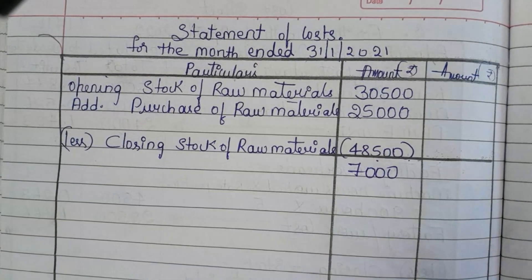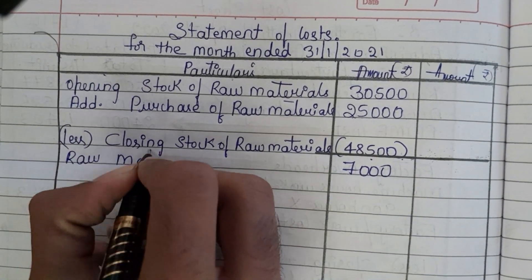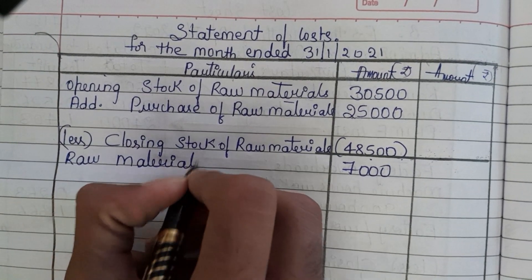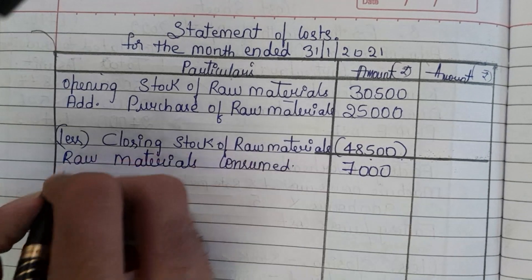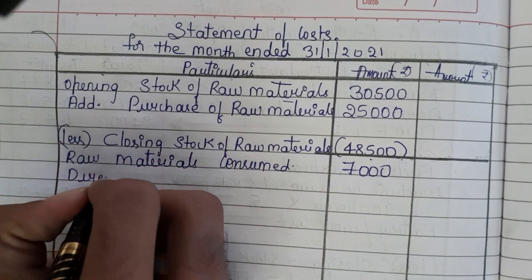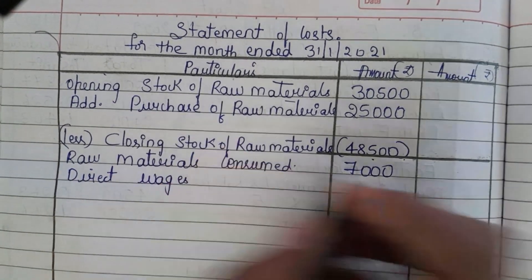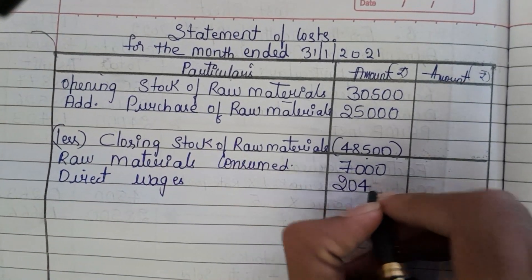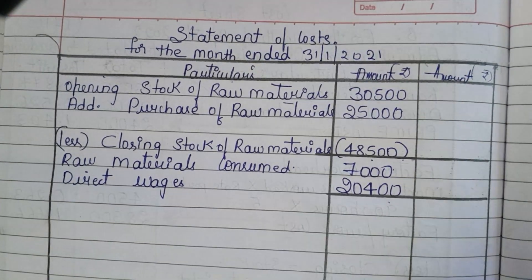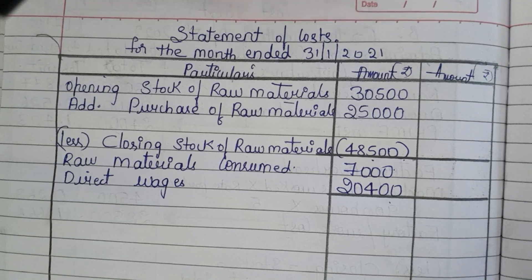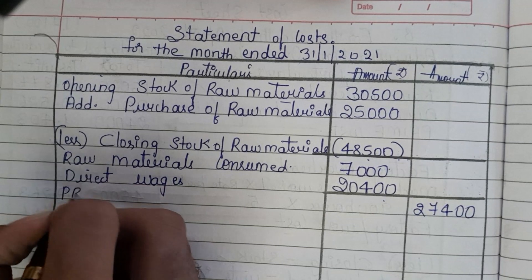We get 7,000, which is raw materials consumed. For this we add direct wages of 20,400. Adding 7,000 and 20,400 gives us 27,400, which is our prime cost.